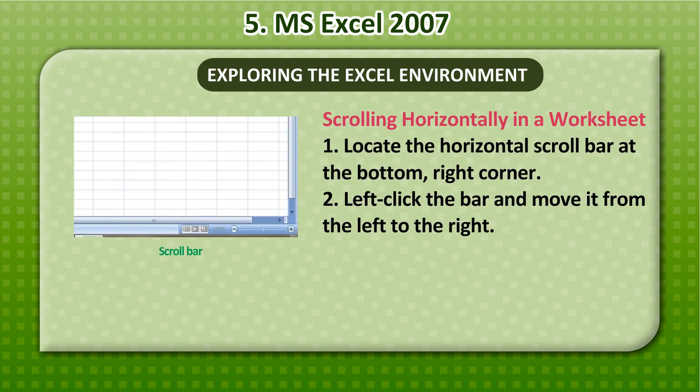Scrolling horizontally in a worksheet: 1. Locate the horizontal scroll bar at the bottom right corner. 2. Left click the bar and move it from the left to the right.